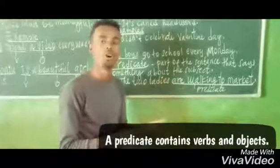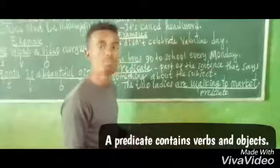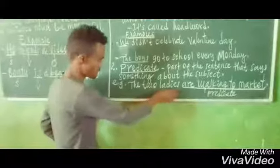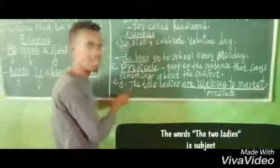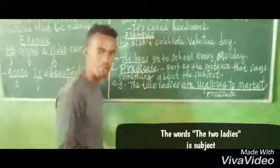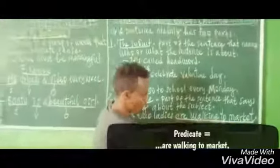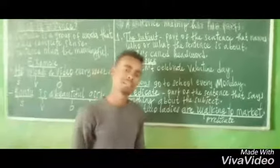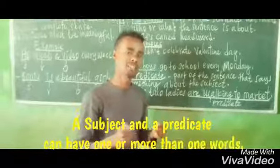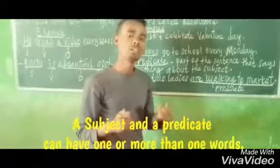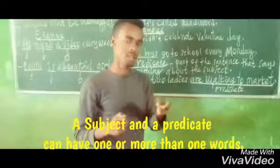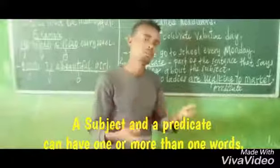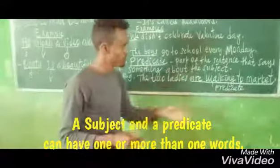The verb and object are the predicate of the sentence. In this sentence, the words 'the two ladies' are the subject, and 'are walking to market' is the predicate. From this we can understand that the subject and predicate can each have more than one word — one or more words can make up a subject, and the same is true for the predicate.